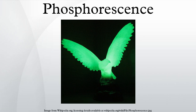Phosphorescence is a specific type of photoluminescence related to fluorescence. Unlike fluorescence, a phosphorescent material does not immediately re-emit the radiation it absorbs. The slower time scales of the re-emission are associated with forbidden energy state transitions in quantum mechanics. As these transitions occur very slowly in certain materials, absorbed radiation may be re-emitted at a lower intensity for up to several hours after the original excitation.